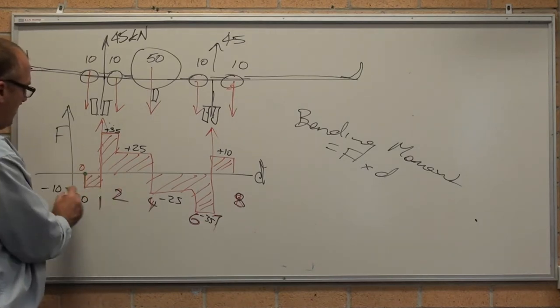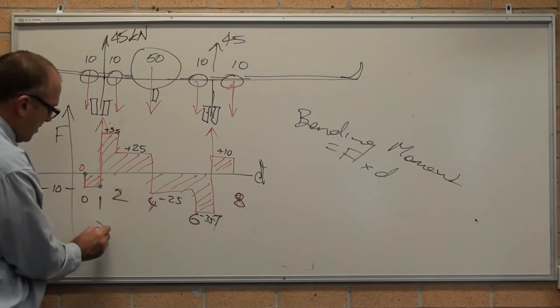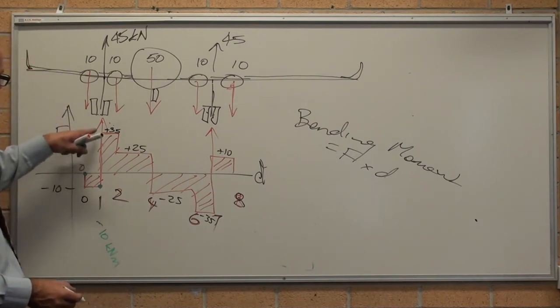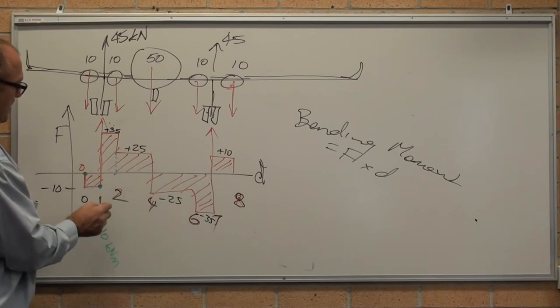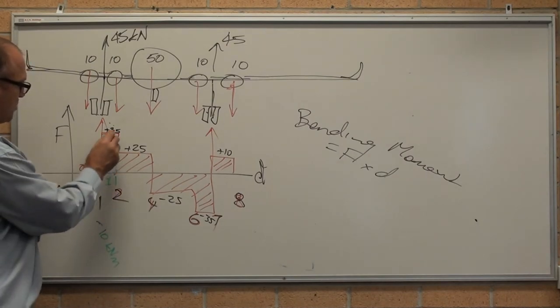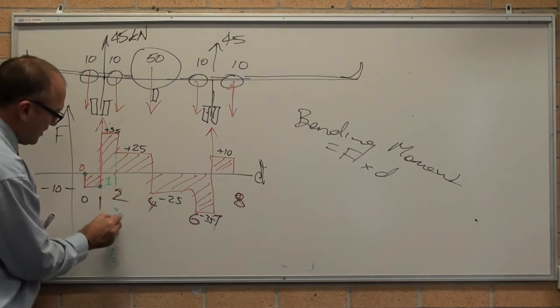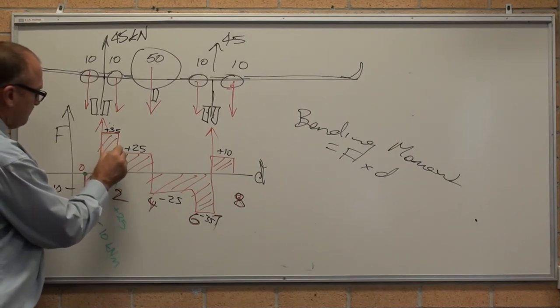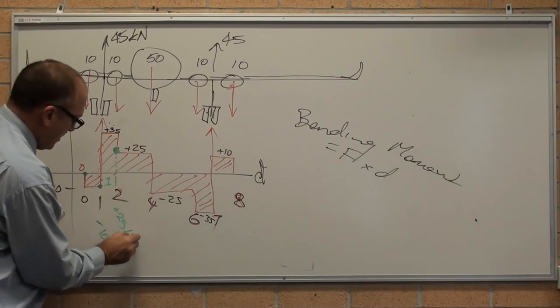So that one there, I'll write it here: minus 10 kilonewton meters. Over here, the total area to the left of that now is—that's 1 meter along times 35, so it's plus 35 minus 10, so that's plus 25 kilonewton meters.